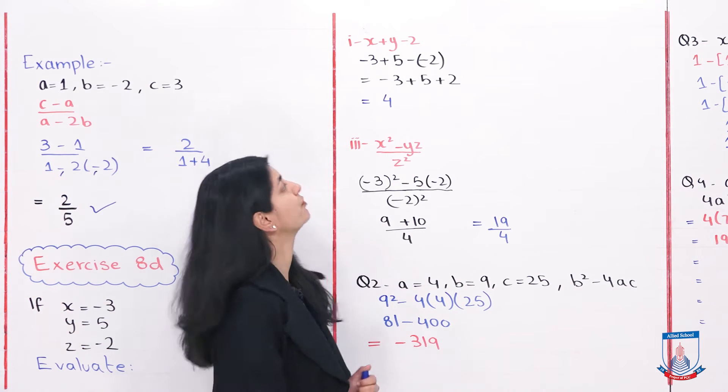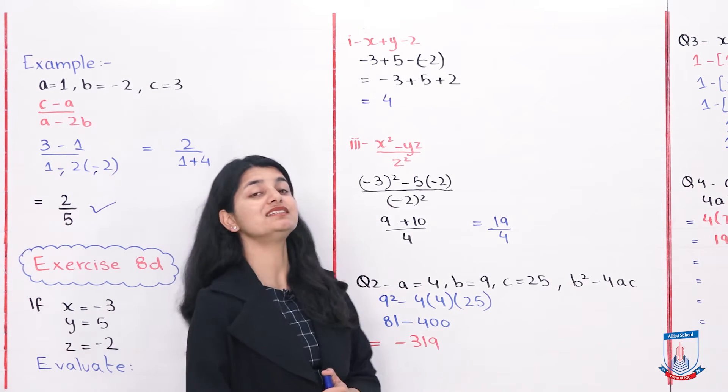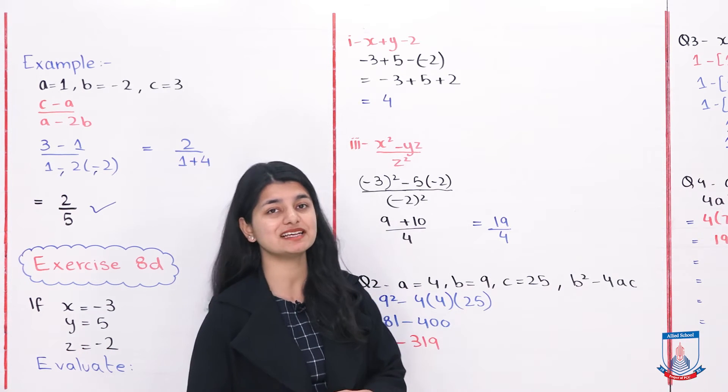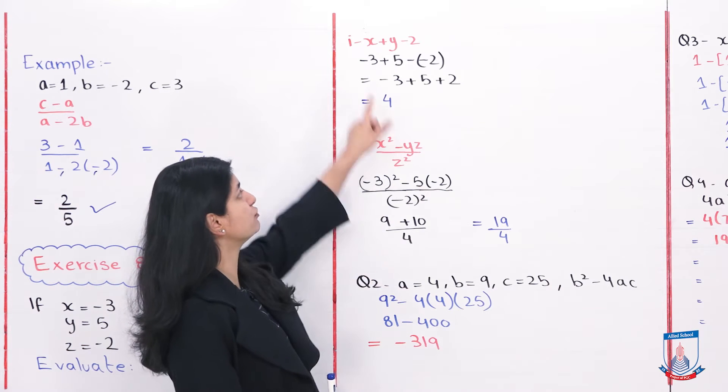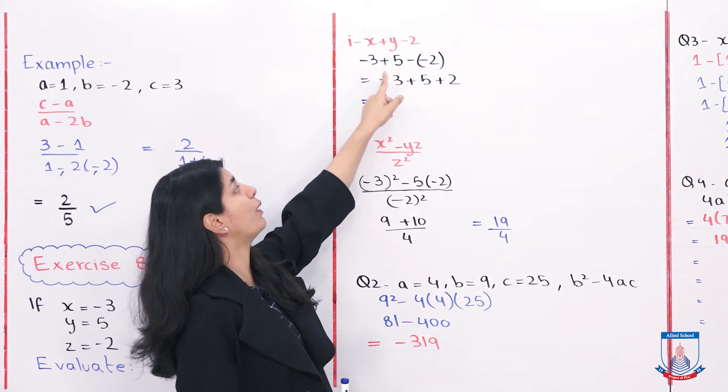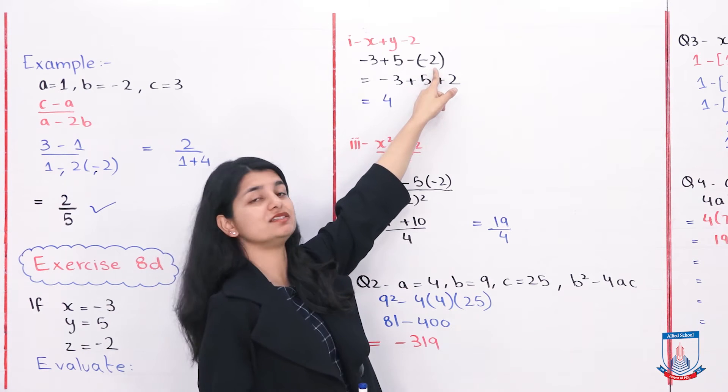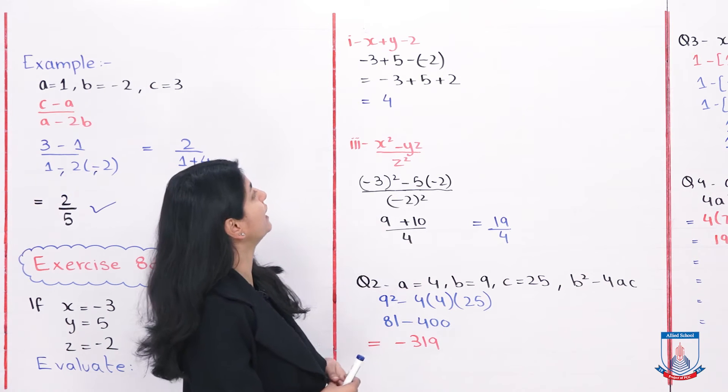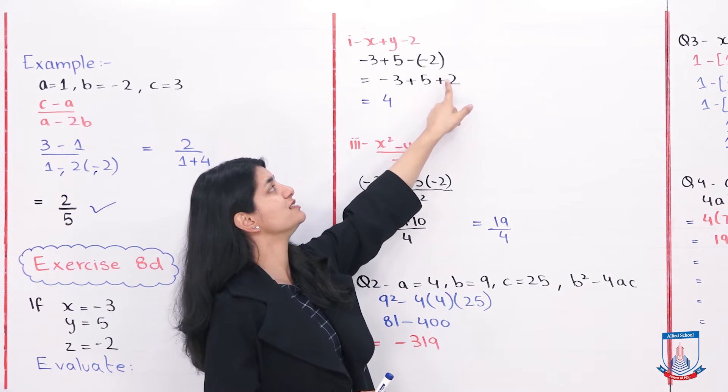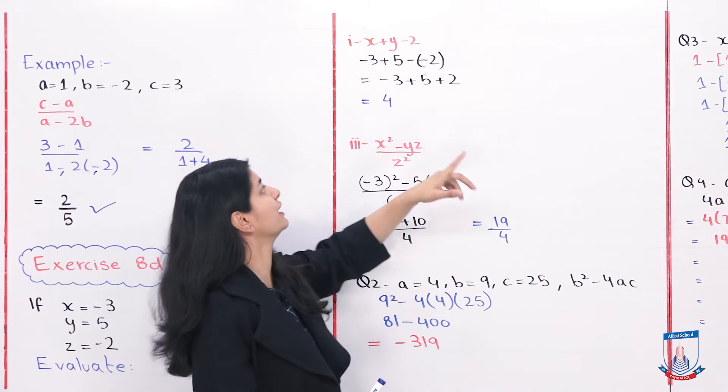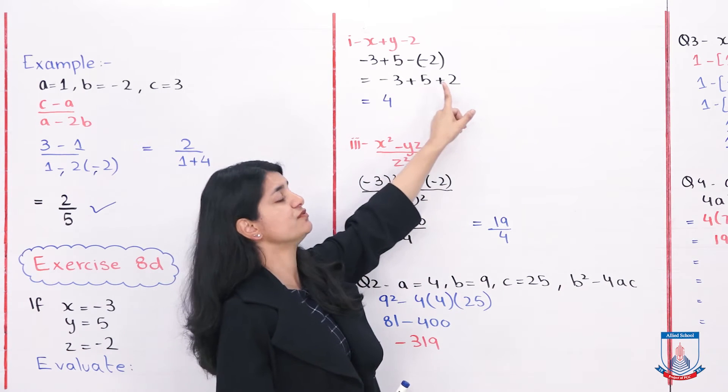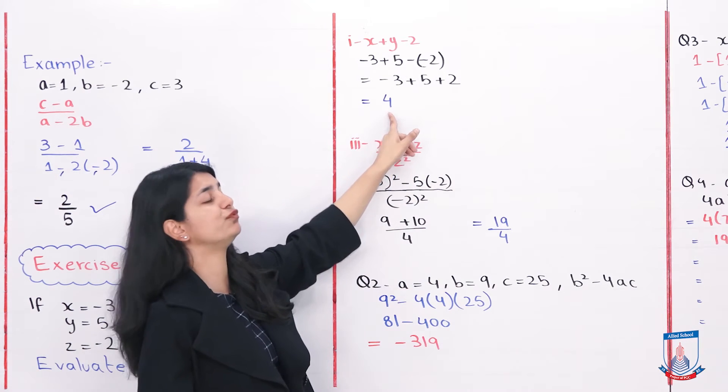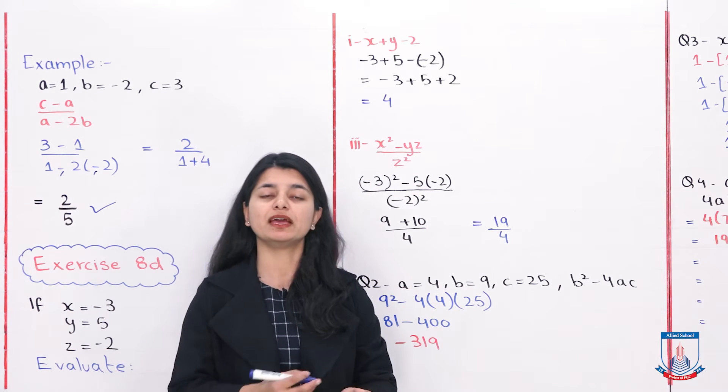The first part is x plus y minus z. We have to replace values with numbers. x is minus 3, y is 5 plus 5, minus z which is minus 2. Minus into minus is plus, so plus 2. Minus 3 plus 5 plus 2 equals 4. Your answer is 4.